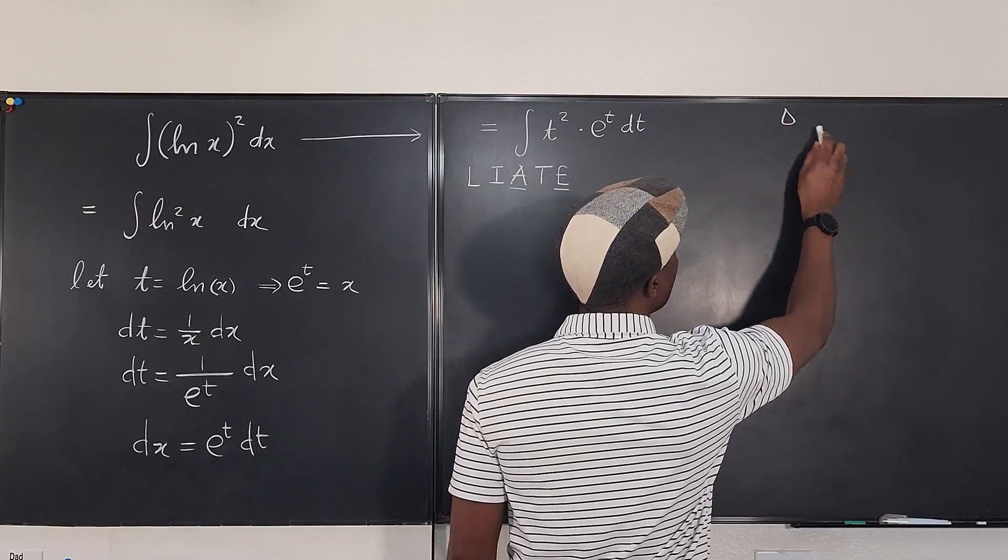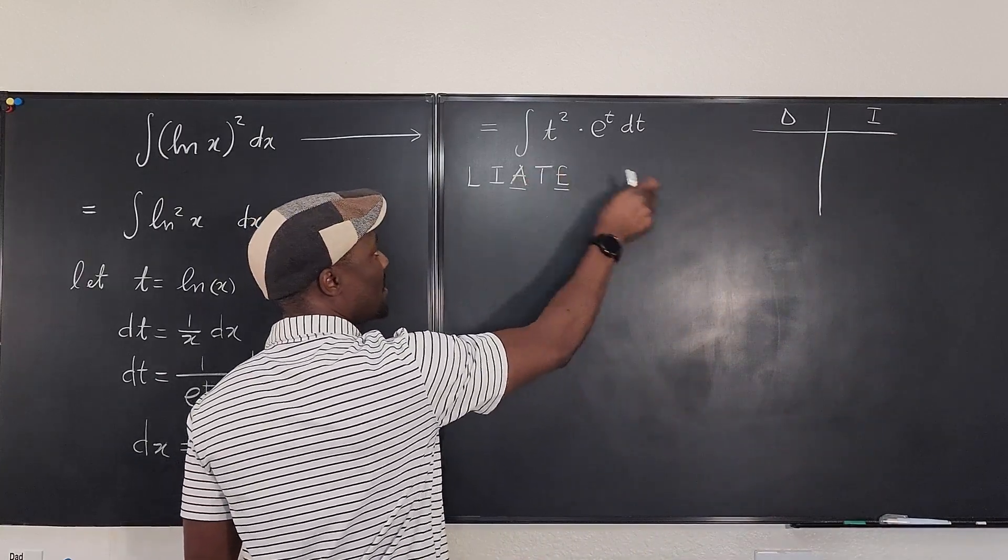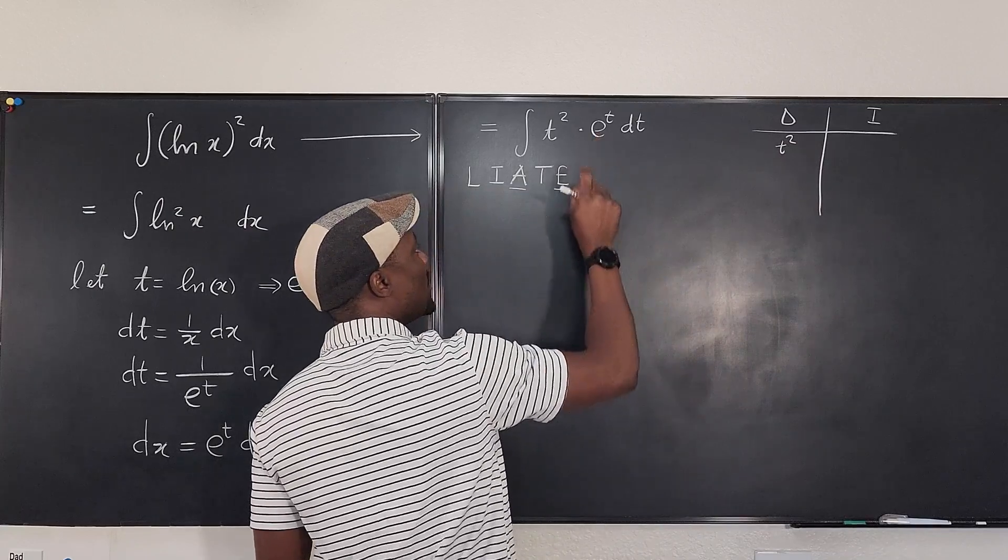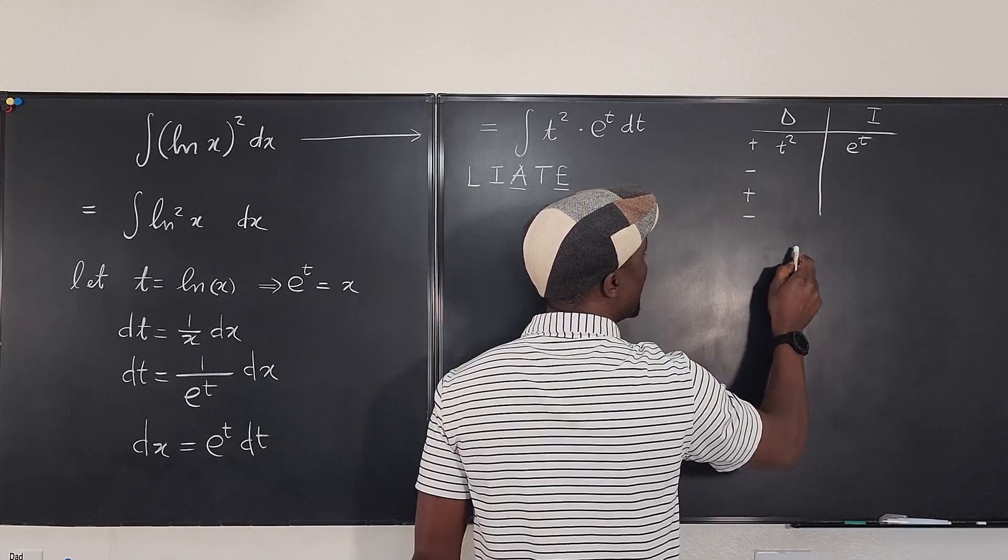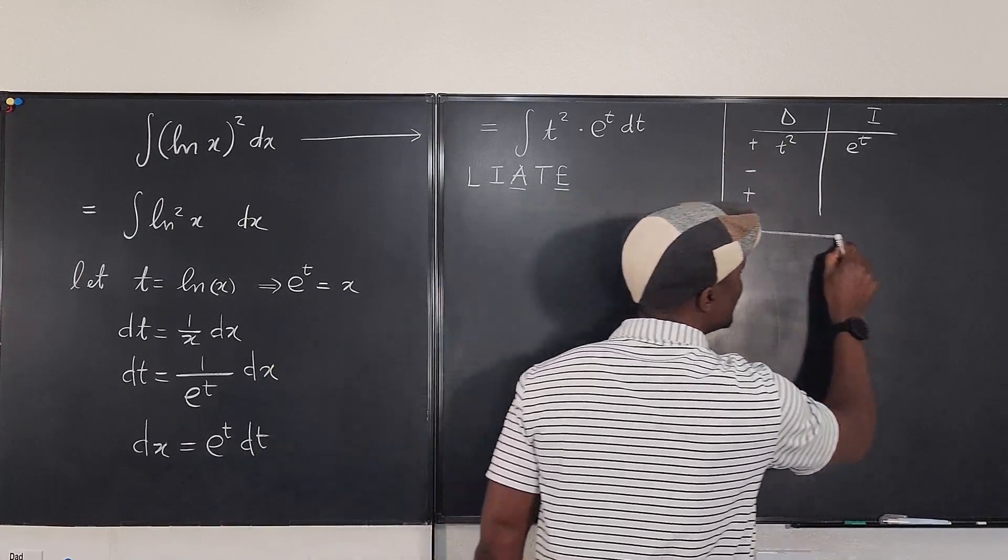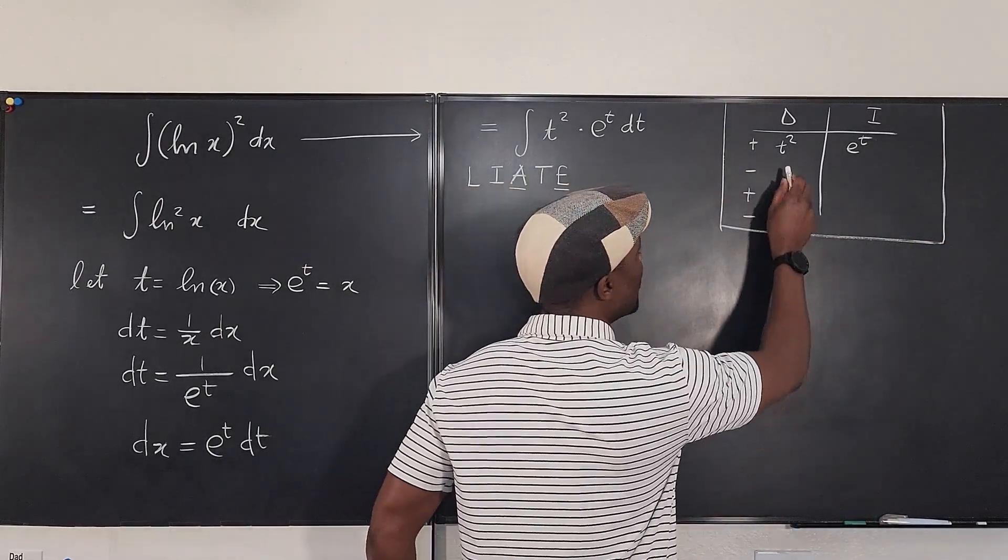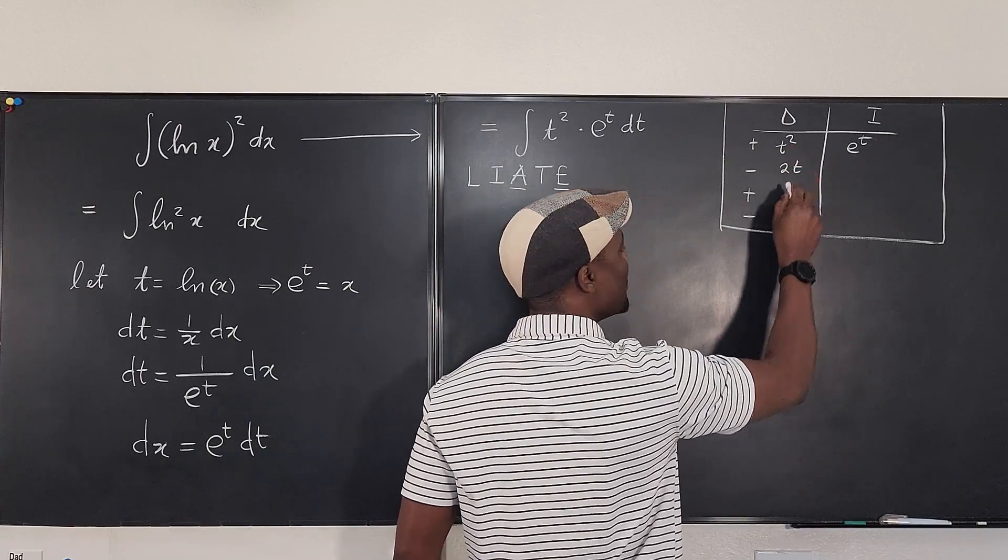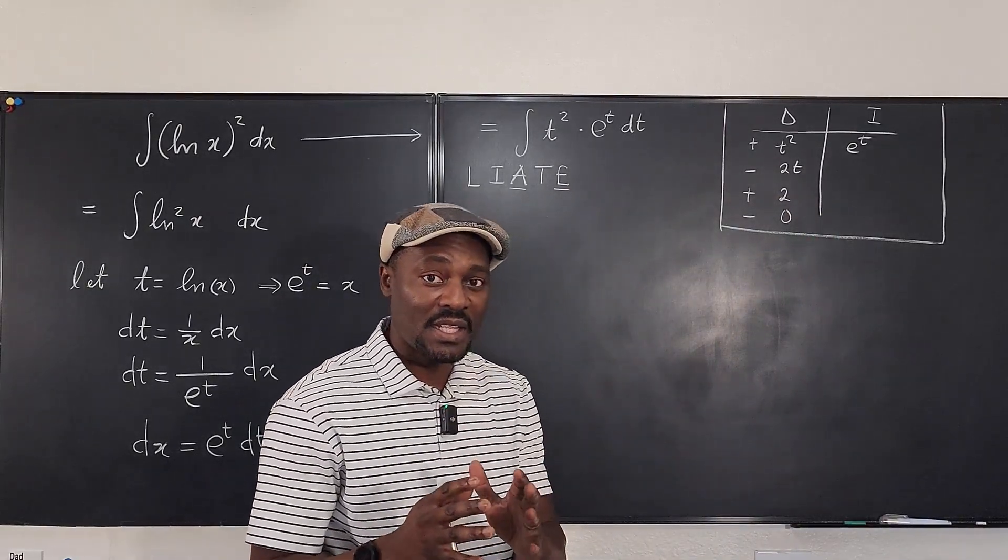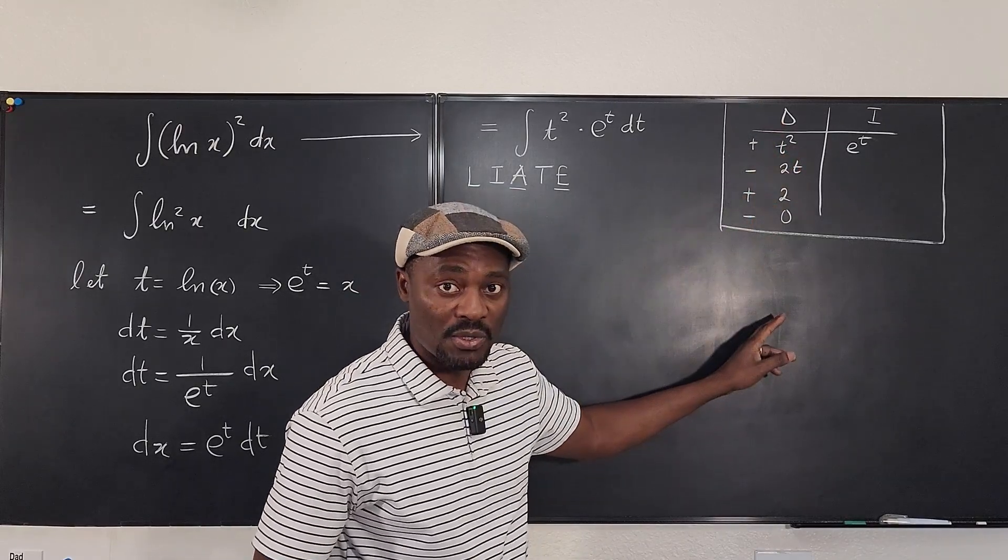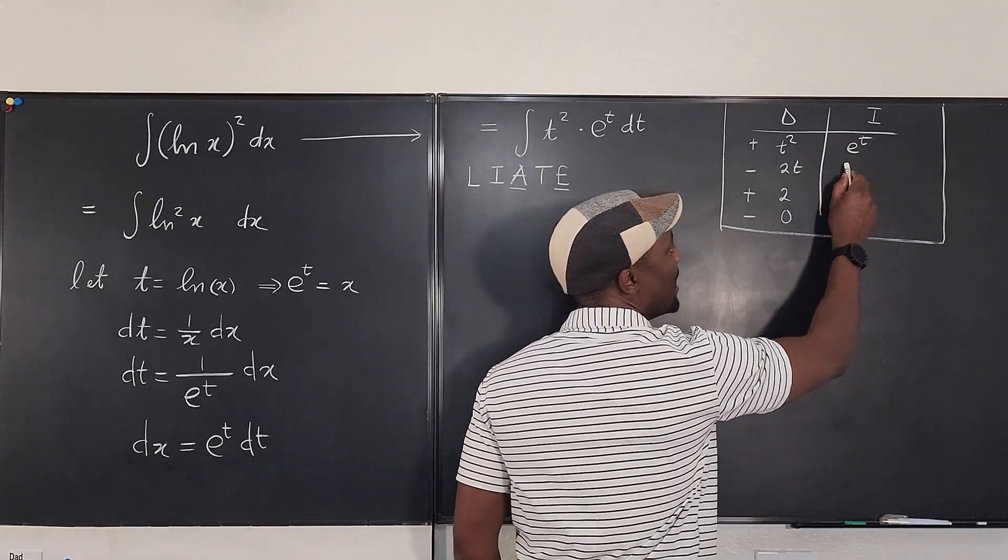So I'm going to differentiate and I'm going to integrate. I will differentiate this, which is t squared. I will integrate this, which is e to the t, but I'm going to write plus, minus, plus, minus on this side. This is all I need to do here. The reason I like doing this is I don't have to write a lot and you can clearly see what you're doing. So if you differentiate t squared, you get 2t. You differentiate again, you get two. You differentiate again, you get zero. You keep differentiating until you get zero when you have a polynomial or an algebraic expression, or until you get a product that you can have.